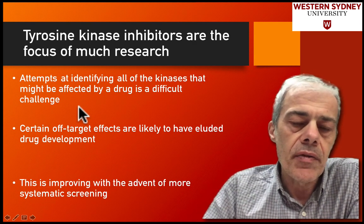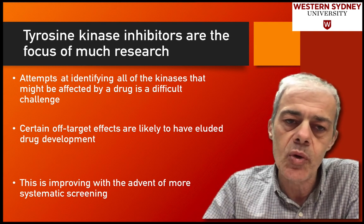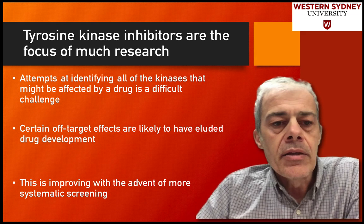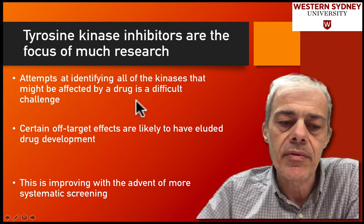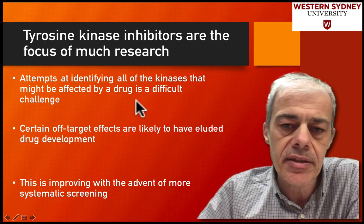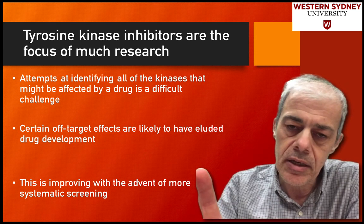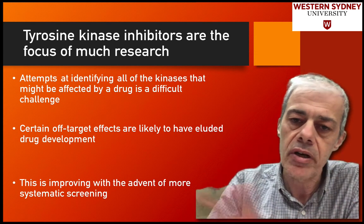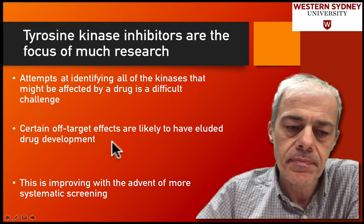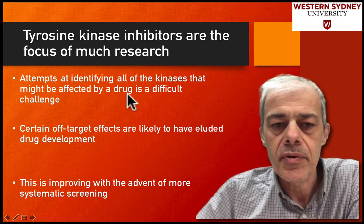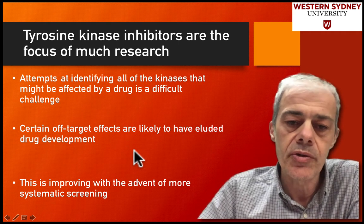A lot of this rational drug design focuses on tyrosine kinase inhibitors because tyrosine kinases play an important role in cell signaling. Identifying all the kinases that might be affected by one of these drugs is challenging — with maybe 100 kinases in the cell, you need to determine how effective the drug is at one kinase versus another. You don't want to knock out multiple pathways; you want to target your drug and minimize off-target effects, some of which may not have been picked up in initial screens. We're starting to appreciate these problems and work towards overcoming them.